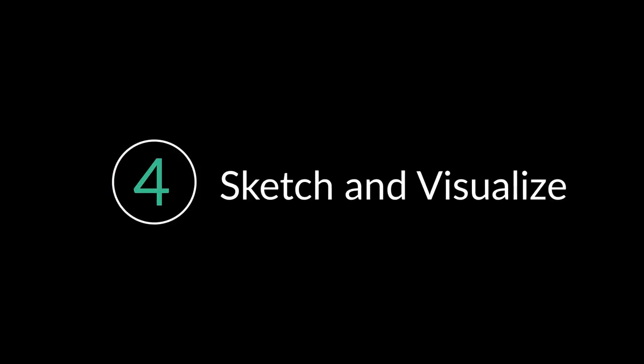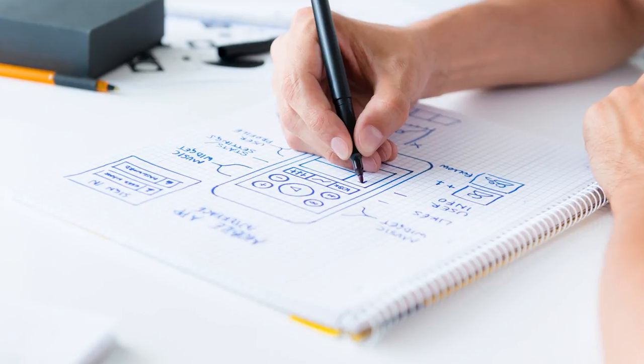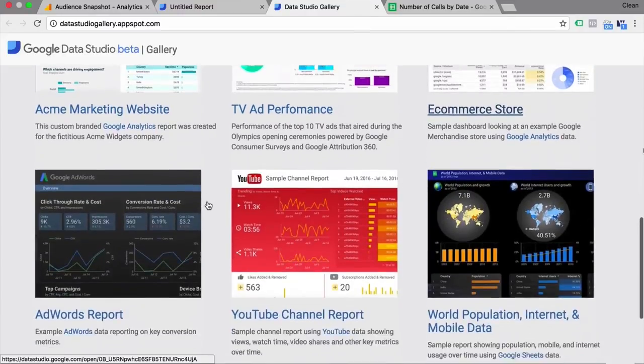Which brings us to number four: sketching out and visualizing. Before you start fiddling with the tool, I would actually recommend getting out pen and paper — take your audience, your message, your story, and your data and sketch them out on paper. How would you arrange your data on a canvas? Which visualizations would you use to communicate your data effectively? You can also start looking at other visualizations and dashboards to see how others have done it. There are great resources, for example, the Data Studio Gallery, or similar galleries for Tableau, Supermetrics, or whichever tool you use. Get inspired and look for the most effective way to present your data. I'm gonna link up some data visualization resources in the description below.